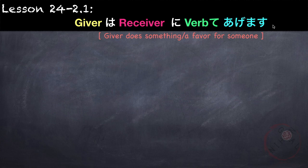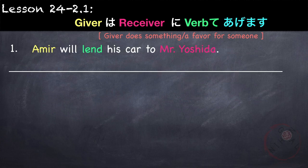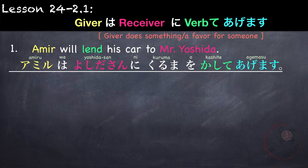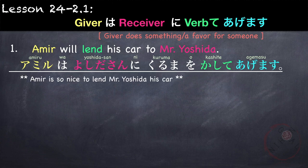Now let's see examples using verb-te agemasu. The pattern is: giver wa, receiver ni, verb-te agemasu, meaning the giver does a favor for someone. Example: Amir will lend his car to Mr. Yoshida — Amiru wa, Yoshida-san ni, kuruma wo, kashite agemasu. Kashimasu becomes kashite in te-form.